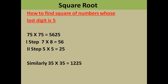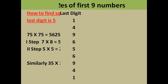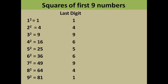Similarly, you can find the square of 35: it is 3 multiplied by the number following it, that is 4 — 3 into 4 gives you 12. Then the last two digits multiply to give you 25. This is applicable to each and every number whose last digit is 5.